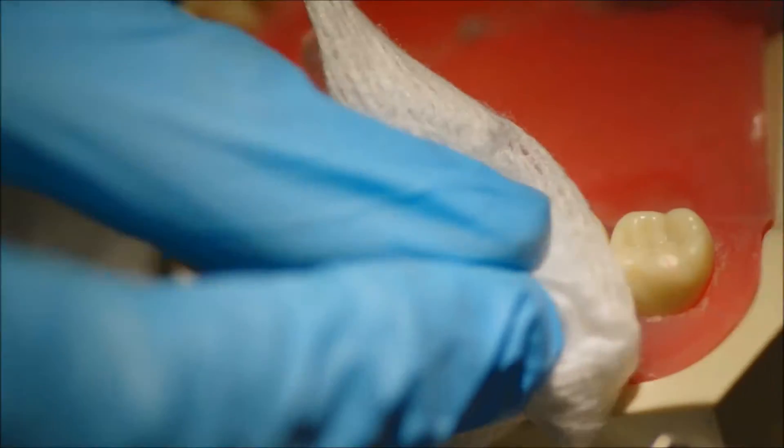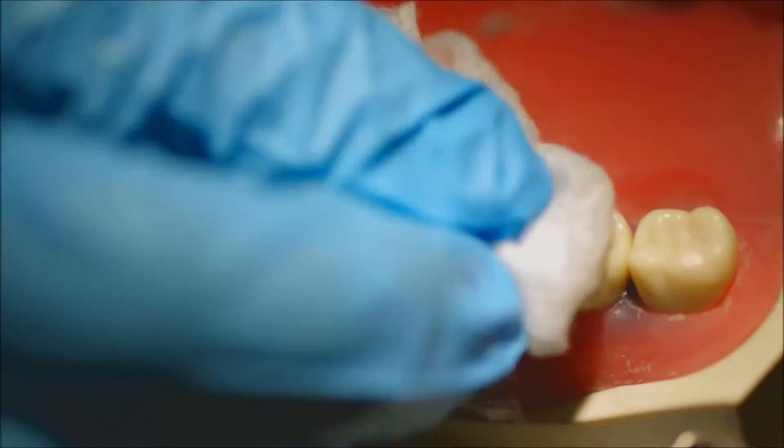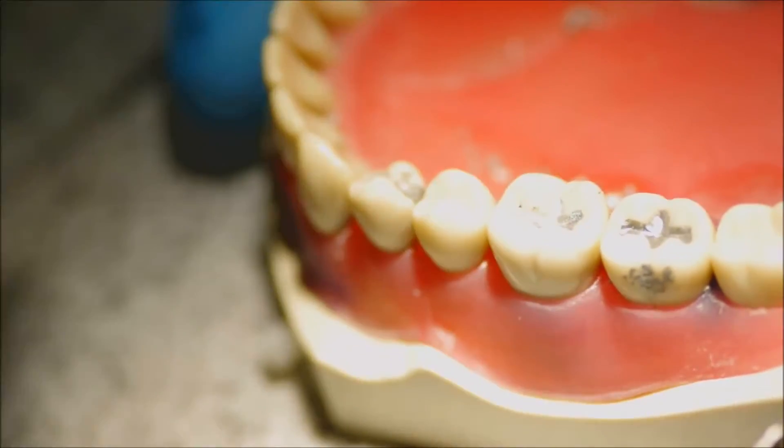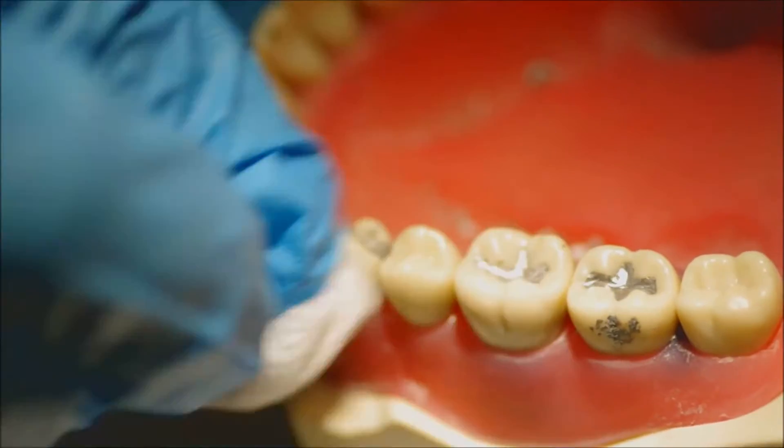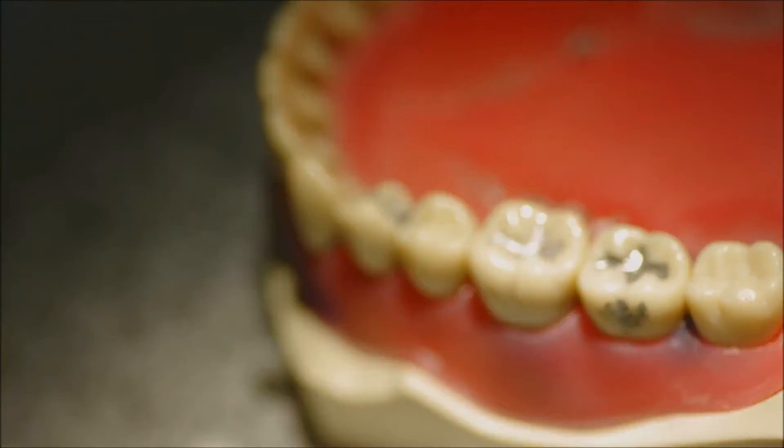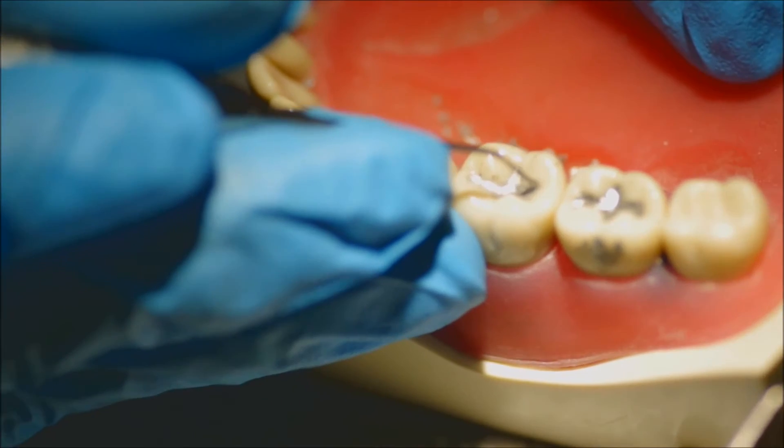Again, anytime you see flash, the easiest way to get rid of it would be to use cotton or to use a cleoid discoid carver which I will show later on in this video. I generally prefer cotton because it's honestly much simpler to use.